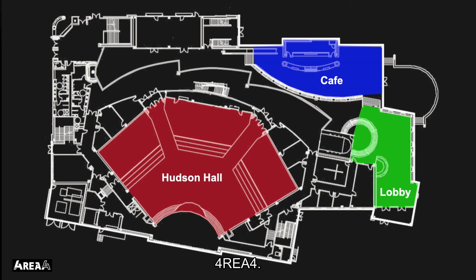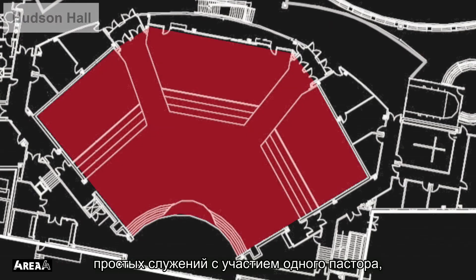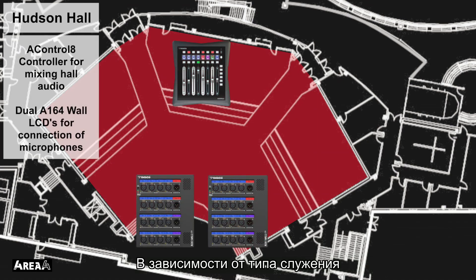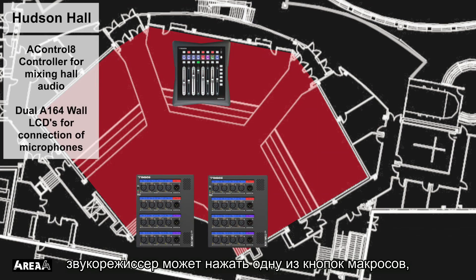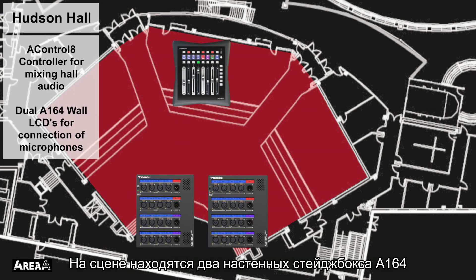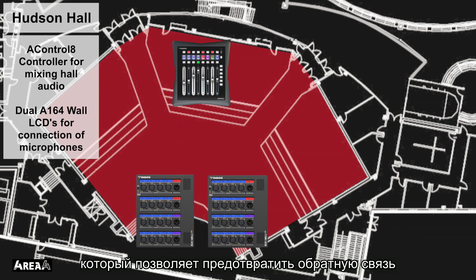At the heart of the audio system is the Fourier 4, which does all of the processing. The main hall, Area 1, is used for simple services with just a pastor, as well as more complex services with musicians, multiple speakers, and microphones being moved around the congregation. For this we've added an A-Control 8. Depending on the service type, the engineer can press one of the macros down the side of the unit to do all of the routing and setup for them. Faders can then be used to control the level of the pastor's microphone and the musicians' instruments. On the stage are two A164 wall LCD boxes to connect microphones to — their LCD scribble strips make it obvious where microphones need plugging in, so anyone could do it. During multiple speaker and interactive congregational services, the Fourier 4's inbuilt AMM is used to prevent feedback and make the engineer's life much easier.